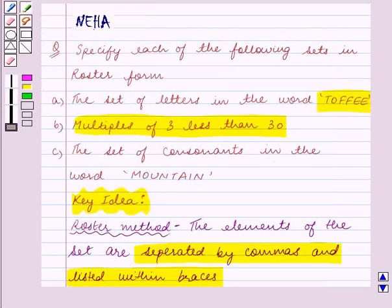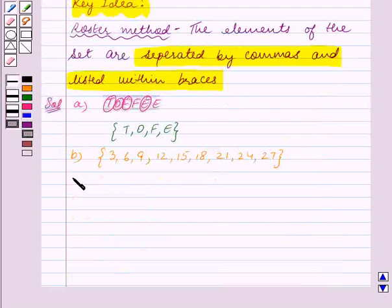Part C is the set of consonants in the word MOUNTAIN. So in part C, we are given the word MOUNTAIN. Let us find the consonants in this word.